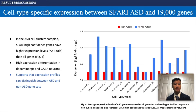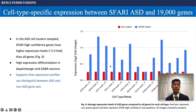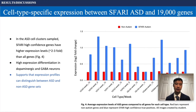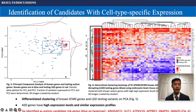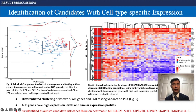For the second test, I compared the cell types of expression between the SFARI autism genes and the 19,000 other genes. It was found that SFARI high-confidence genes had 2 to 3-fold higher expression levels compared to the average of all genes, especially in the dopaminergic and GABA neurons. This supports that expression profiling can differentiate between autism and non-associated gene sets. Differential clustering was also found with the SFARI genes and the likely gene-disrupting testing variants on principal component analysis, with known genes in the blue region and testing genes in red.